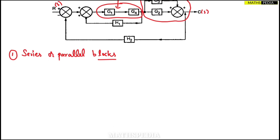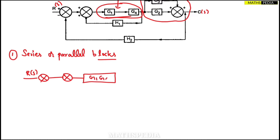We are going to reduce those into single blocks. I'll draw this again: here we have one summing point with R(s), then another summing point, then G1 and G4. For series blocks G1 and G4, you just multiply them to get G1·G4. For parallel blocks G3 and G2, you just add them to get G3 + G2.